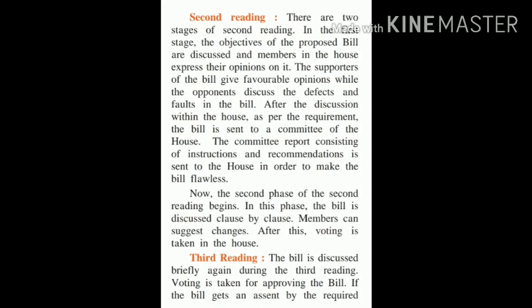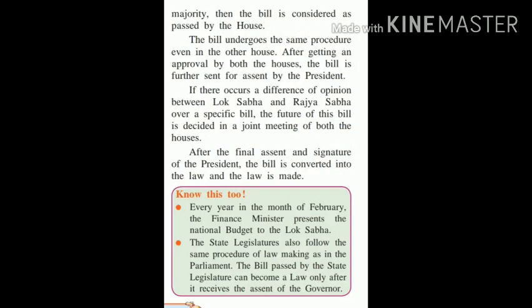During the third reading, the bill is discussed briefly and voting is taken to approve it. If the bill gets assent by the required majority, the bill is considered passed by the house. The bill then undergoes the same procedure in the other house. After approval by both houses — Lok Sabha and Rajya Sabha — the bill is further sent for the President's assent.